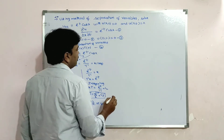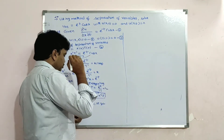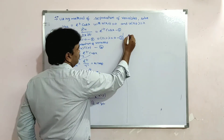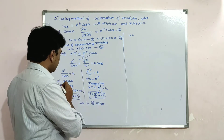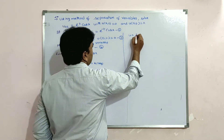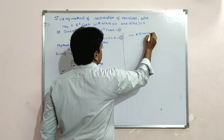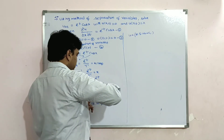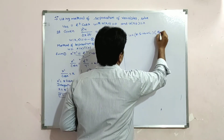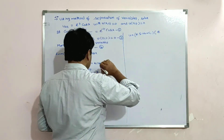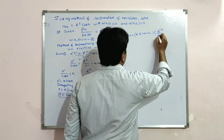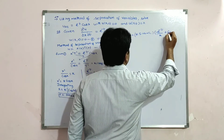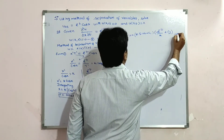Substituting X and T back into equation 4, we get: u = (k·sin(x) + c₁)·(−e^(-t)/k + c₃). Say this is equation 5.